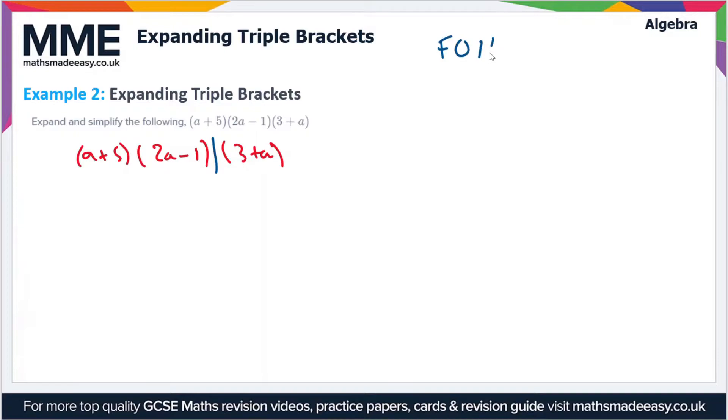We're going to use the FOIL method here: First, Outside, Inner, Last. The first terms: a × 2a = 2a². Outside: a × -1 = -a. Inner: 5 × 2a = +10a. Last: 5 × -1 = -5. Let's put this in brackets because we're going to multiply by (3 + a).